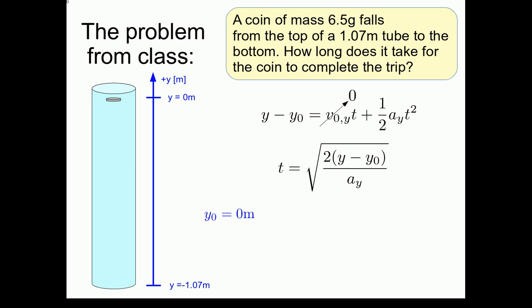Translating this into our variables for our time expression, we have that the initial position y-not in this case is 0 meters, and the final position of the coin is now going to be negative 1.07 meters. The coin in this case always has a negative position. It starts from 0 and goes down, so it becomes more and more negative as it falls.